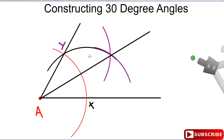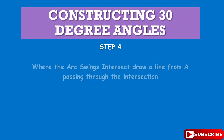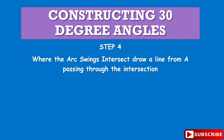What we did was bisect the 60-degree angle in two. This angle down here is 30 degrees, and this angle up here is also 30 degrees. That's the beauty of this — that's how you construct your 30-degree angle. Nice and easy.